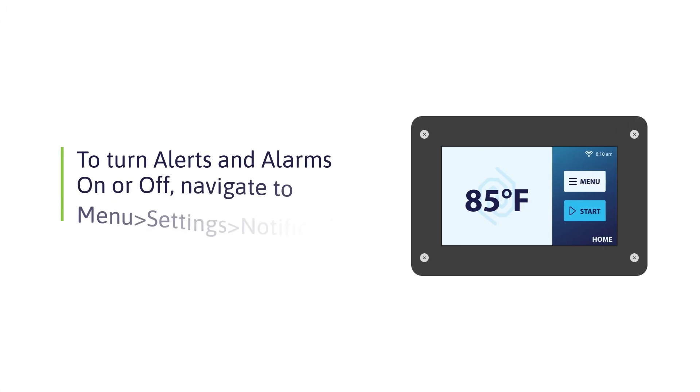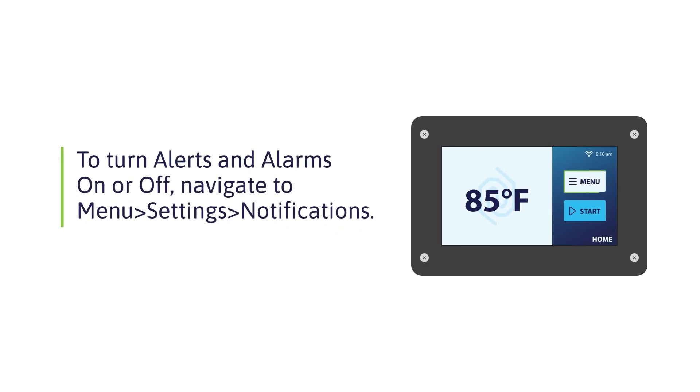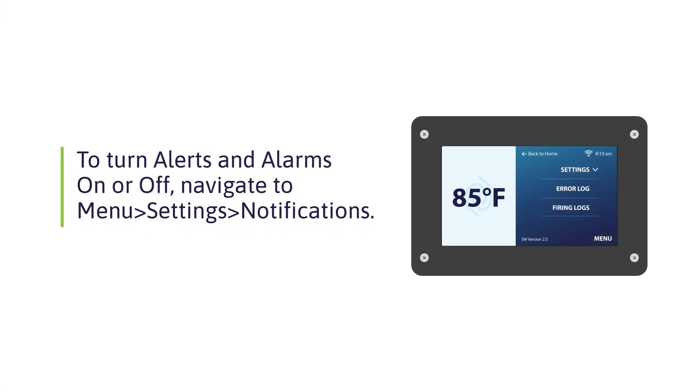To turn alerts and alarms on or off, navigate to Menu from the home screen, then expand Settings and select Notifications.